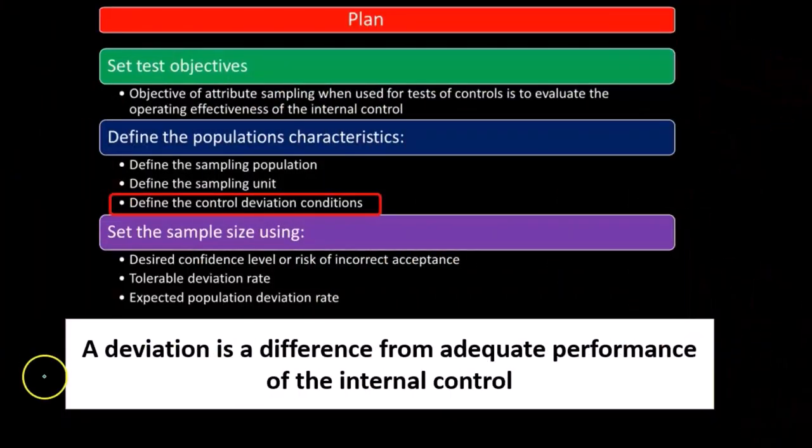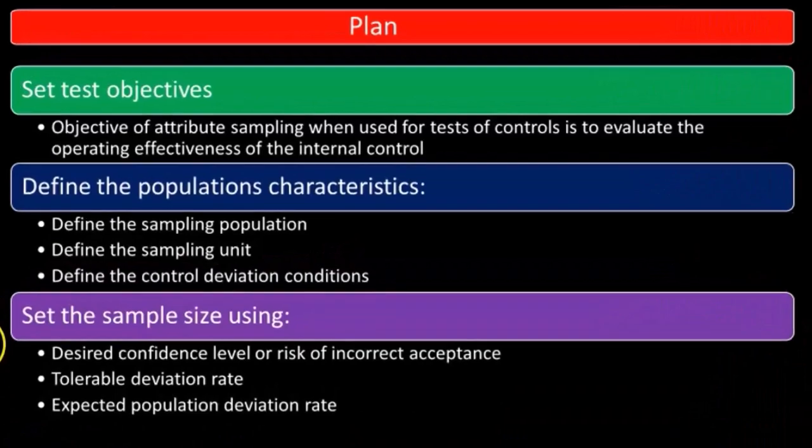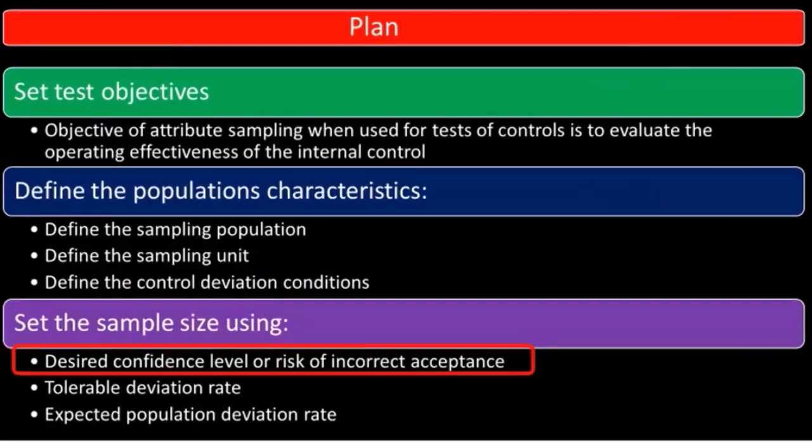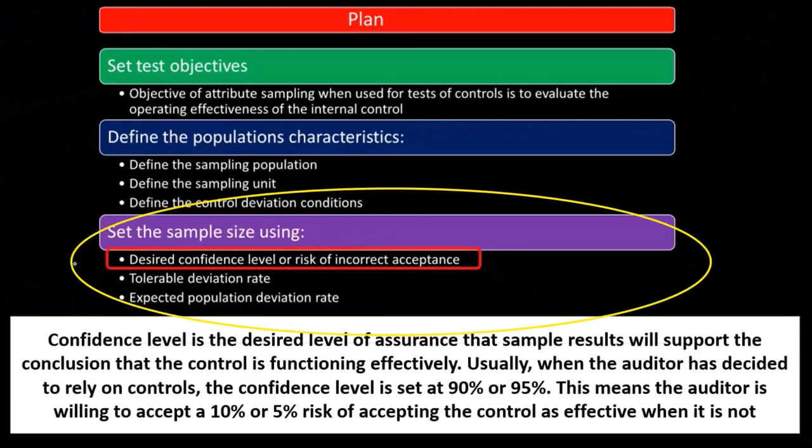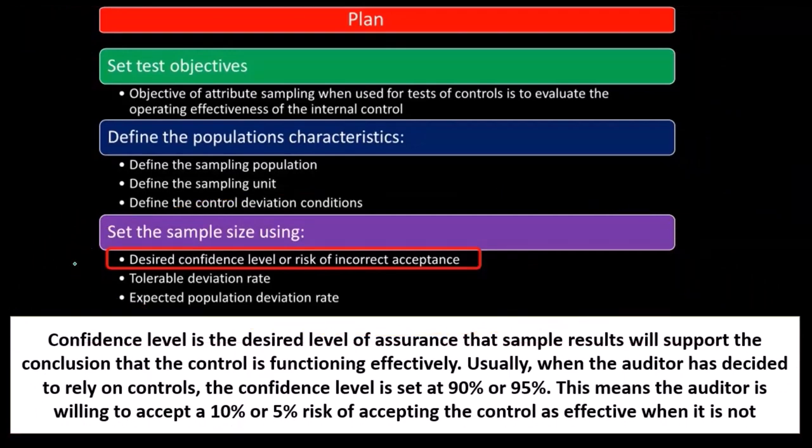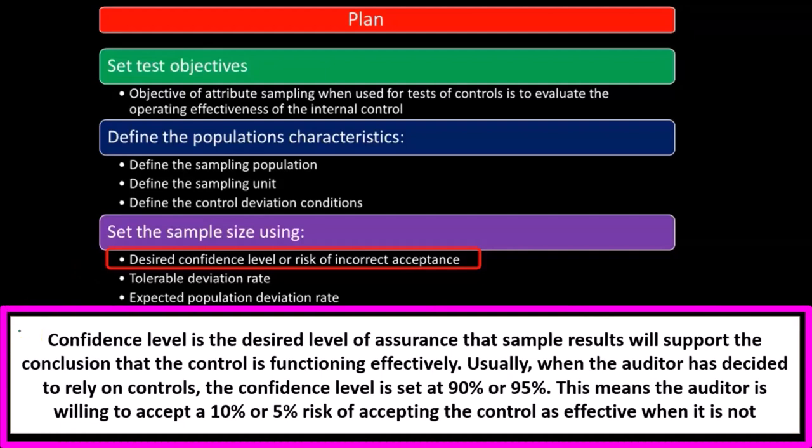When we set the sample size using desired confidence level or risk of incorrect acceptance, we're thinking about setting the sample size looking specifically at the desired confidence level or risk of incorrect acceptance. Confidence level is the desired level of assurance that sample results will support the conclusion that the control is functioning effectively.